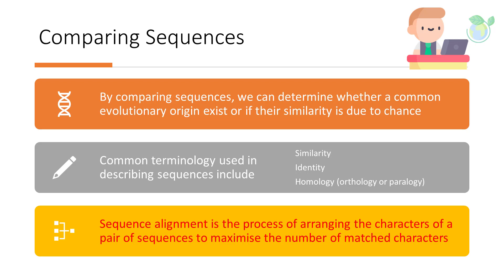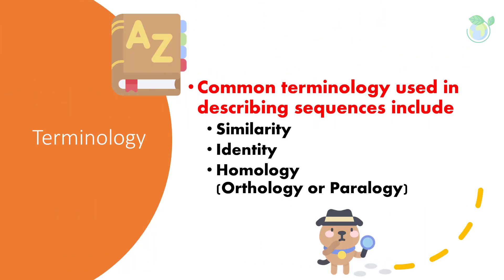Sequence alignment is the process of arranging the characters of a pair of sequences to maximize the number of matched characters. Similarity is defined as the degree of resemblance between two sequences. Identity refers to more specific situations, such as the state of possessing the same subsequence — we typically score similarity as percentage identity. The term homology refers to the state of sharing a common evolutionary origin; two sequences are homologous if they have a common ancestor.